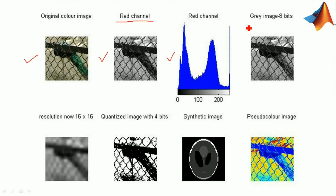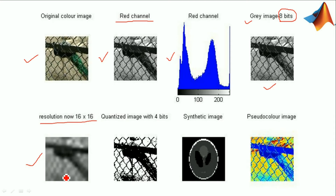After that, we'll obtain the gray image of 8 bits — that is, each pixel will contain 8 bits. Then we'll convert this gray image to a resolution of 16 by 16. This is the gray image of 8 bits, and this is the image of resolution 16 by 16, the converted version from gray image 8 bits. After that, we'll go for gray slice, and we'll convert this gray image to a quantized image using only two gray levels, that is 2 to the power of 2, equal to 4.